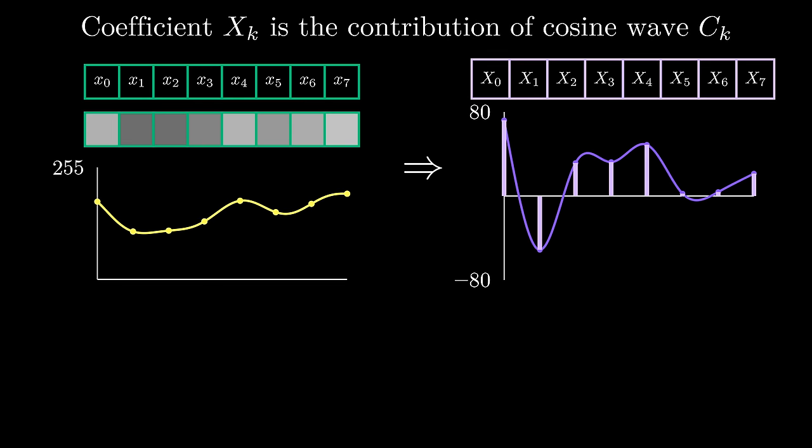Brighter images will have a larger 0th coefficient than darker images. This is why shifting up a cosine wave only impacts the 0th coefficient. Putting this all together, each of these frequencies corresponds to a different pattern of images, and what the core DCT does is break down how each of these fundamental patterns contributes to the original image. All possible combinations of 8 pixel values can be represented as a sum of these 8 cosine waves.